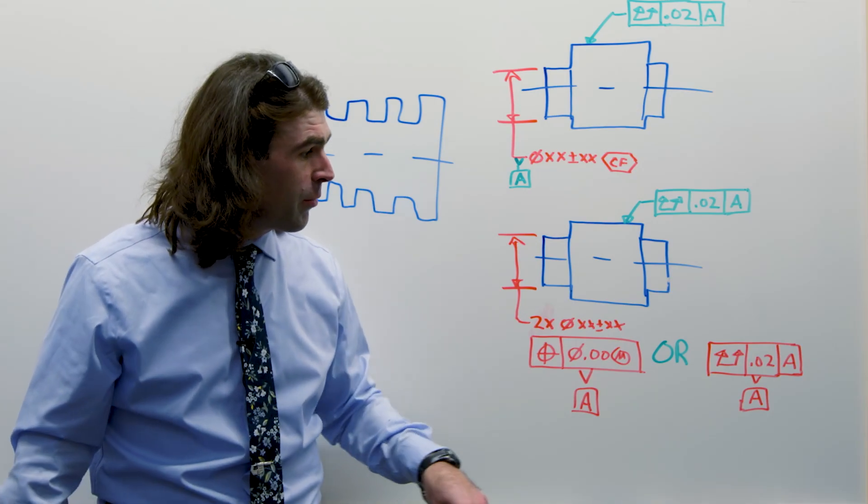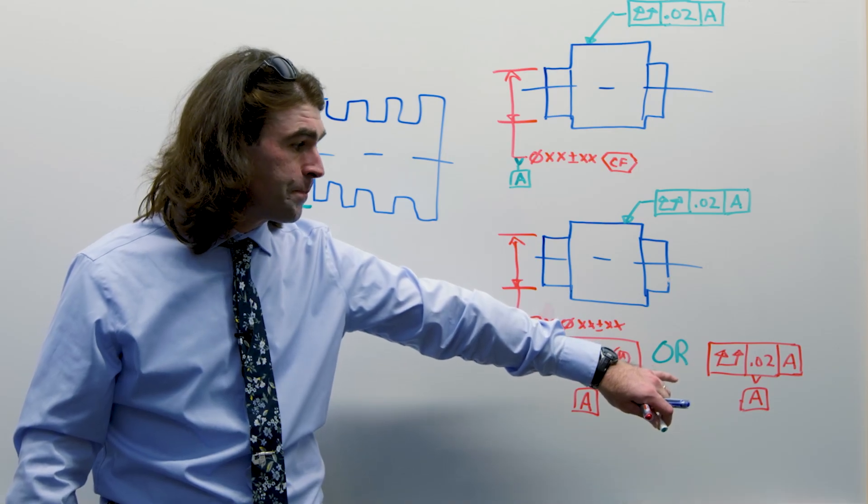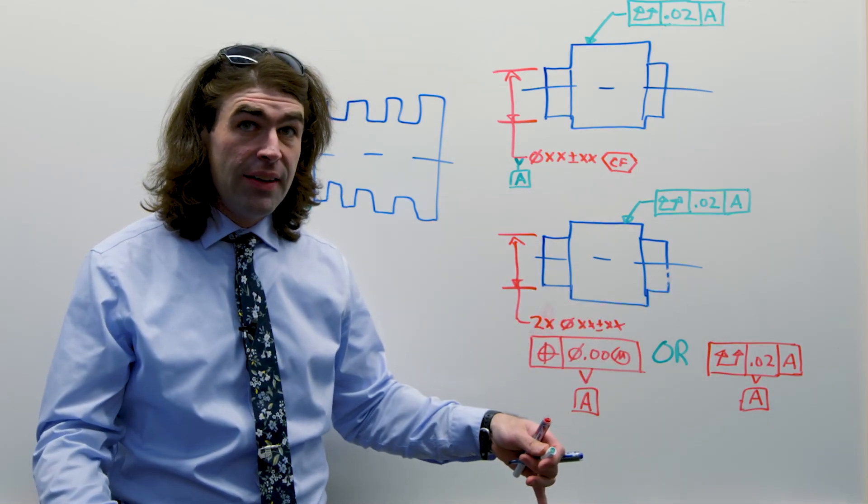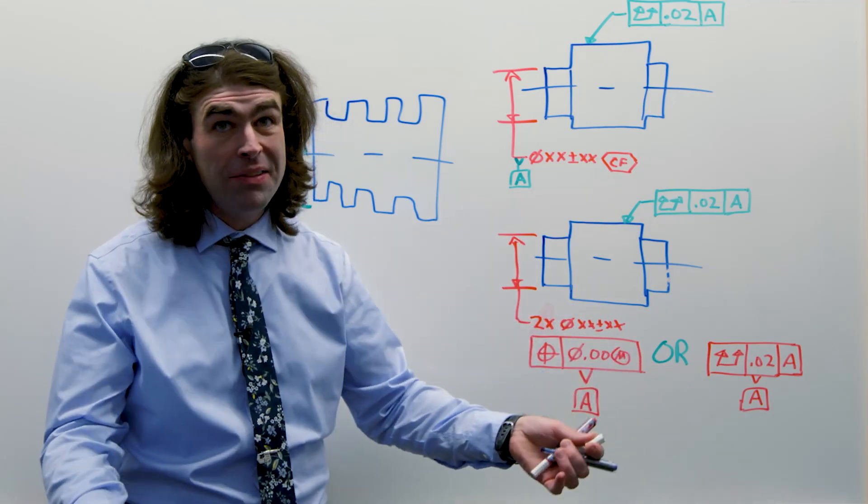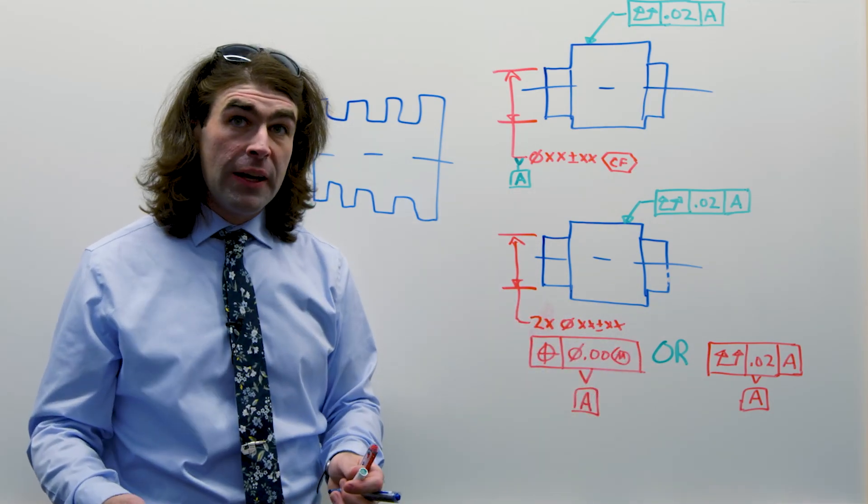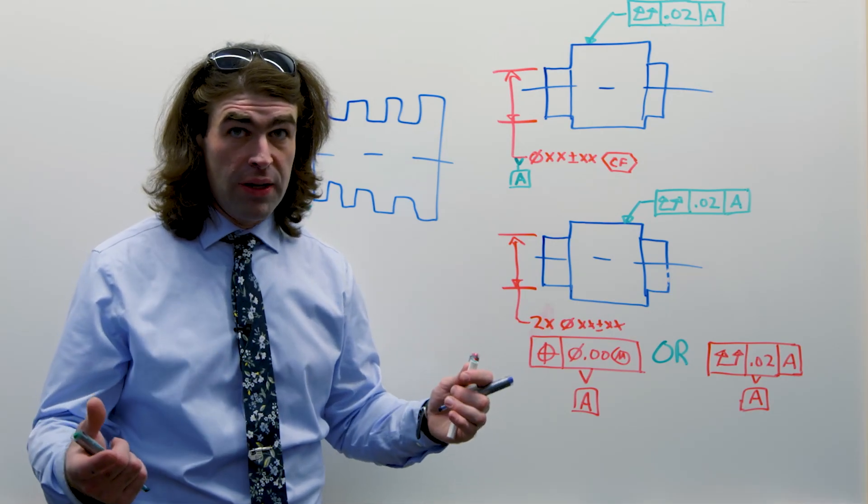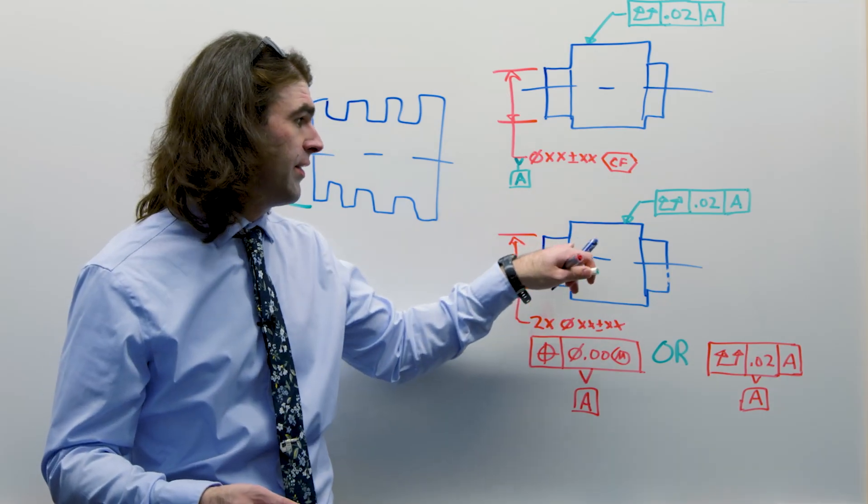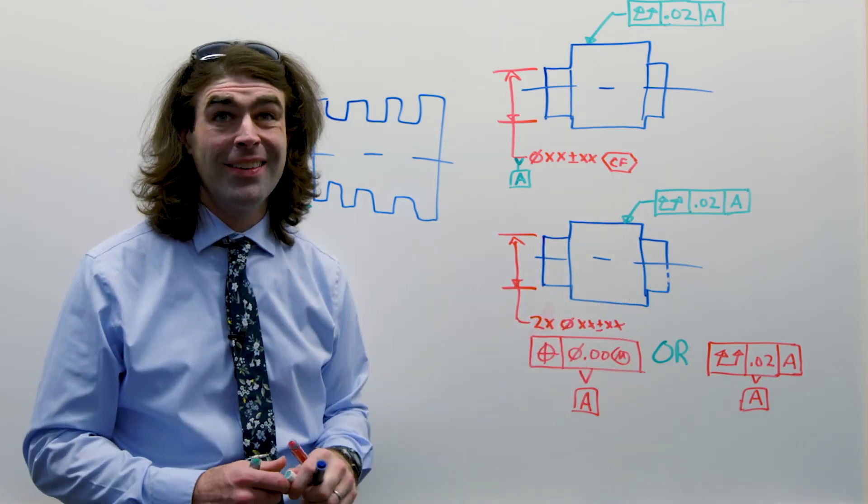So following that logic, what we're doing here is saying this and this are datum A and it's got to have runout basically to itself. Practically speaking, if you're going to measure this in a set of V blocks, you're going to spin it around. You check this, this, and this kind of all at the same time.